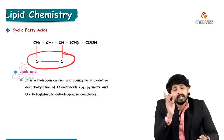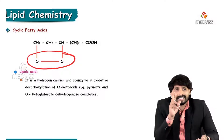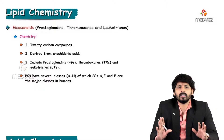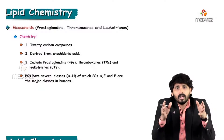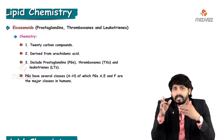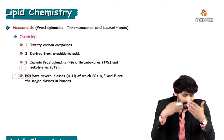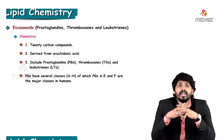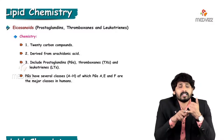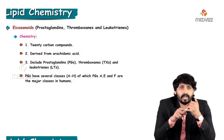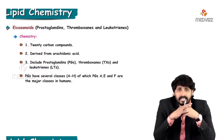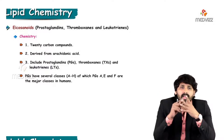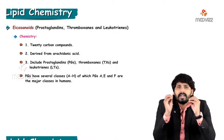Coming to eicosanoids — these are more complicated structure-wise. The substances under eicosanoids include prostaglandins, thromboxanes, and leukotrienes. All are made up of 20 carbons and are derived from arachidonic acid. Prostaglandins have subclasses ranging from A to H, with types A, E, and F being the major prostaglandins in humans.